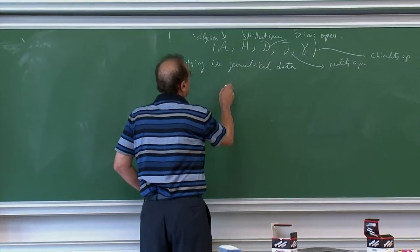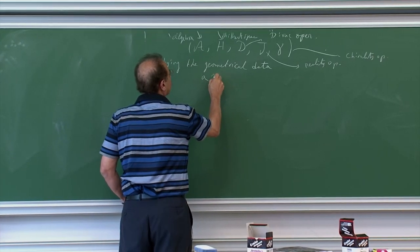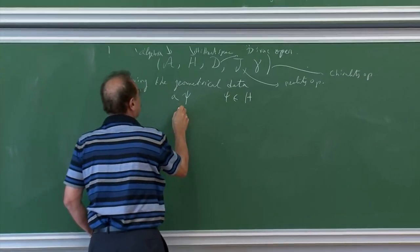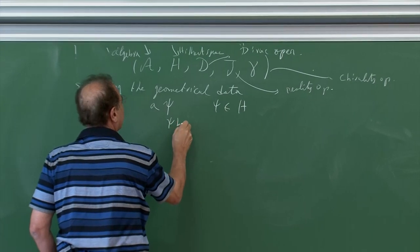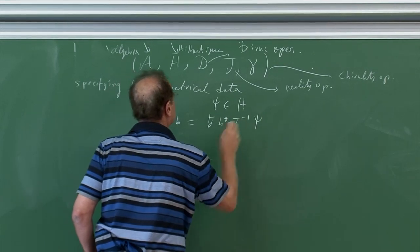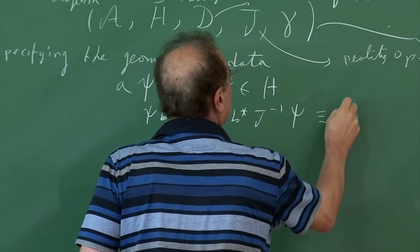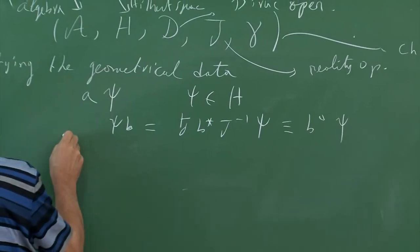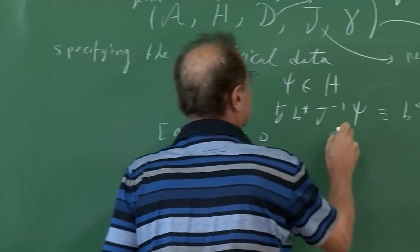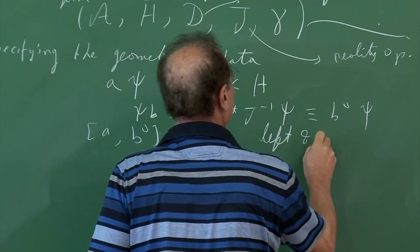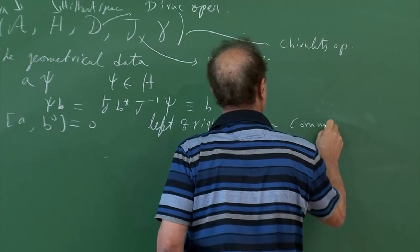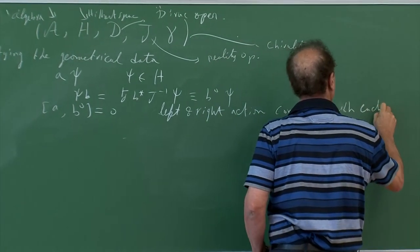We defined a left action on the Hilbert space and a right action, defined to be J b* J⁻¹ psi, which is called b-opposite psi. We said that the left and right actions commute with each other.